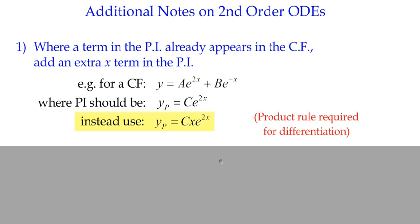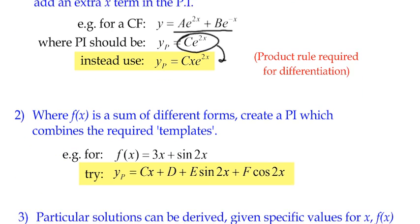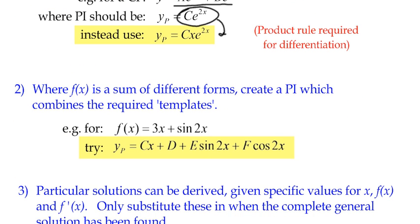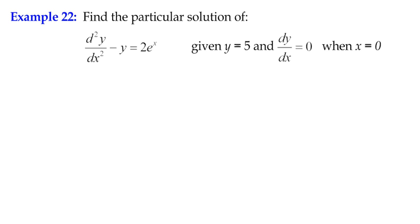In example 21 I went over some additional notes. First, if we're duplicating a possible solution from our complementary function with our particular integral, we have to multiply the particular integral by x to create a unique solution — we'll look at that in example 22. The second note says that sometimes the particular integral might be a sum of different terms, which we won't cover in this course. The third note is that we can find particular solutions once we have the general solution. So we're going to look at points one and three here.